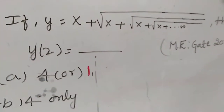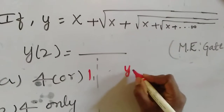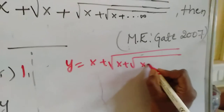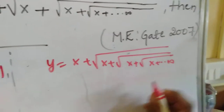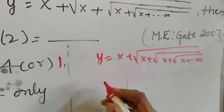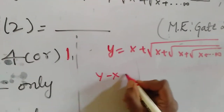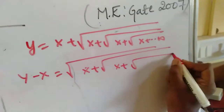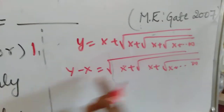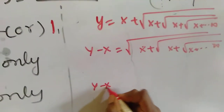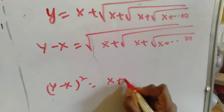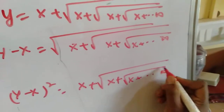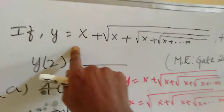To solve this problem, step by step: y is equal to x plus root of x plus root of x plus root of x and so on to infinity. We take x to the left side and get y minus x equal to root of x plus root of x plus and so on to infinity. Then we square both sides and get y minus x whole square equal to x plus root of x plus root of x and so on to infinity.